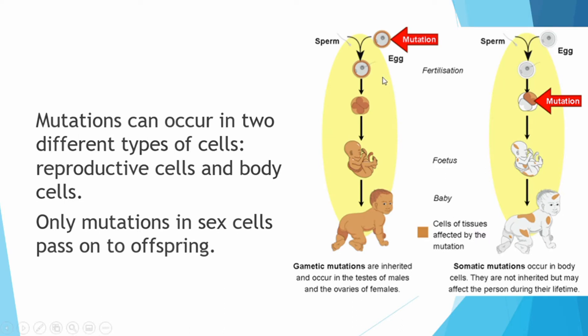Mutations can occur in two different types of cells: the reproductive cells and the body cells. Only mutations in sex cells are passed on to the offspring. Mutations affect the reproductive cells of an organism by changing the sequence of nucleotides within a gene in a sperm or an egg cell. If these cells are fertilized, then the mutated gene becomes part of the genetic makeup of the organism. If the mutation is severe, the resulting protein may be non-functional and the embryo may not develop. There are two types of mutations that can occur in gamete cells: gene mutation and chromosome mutation.